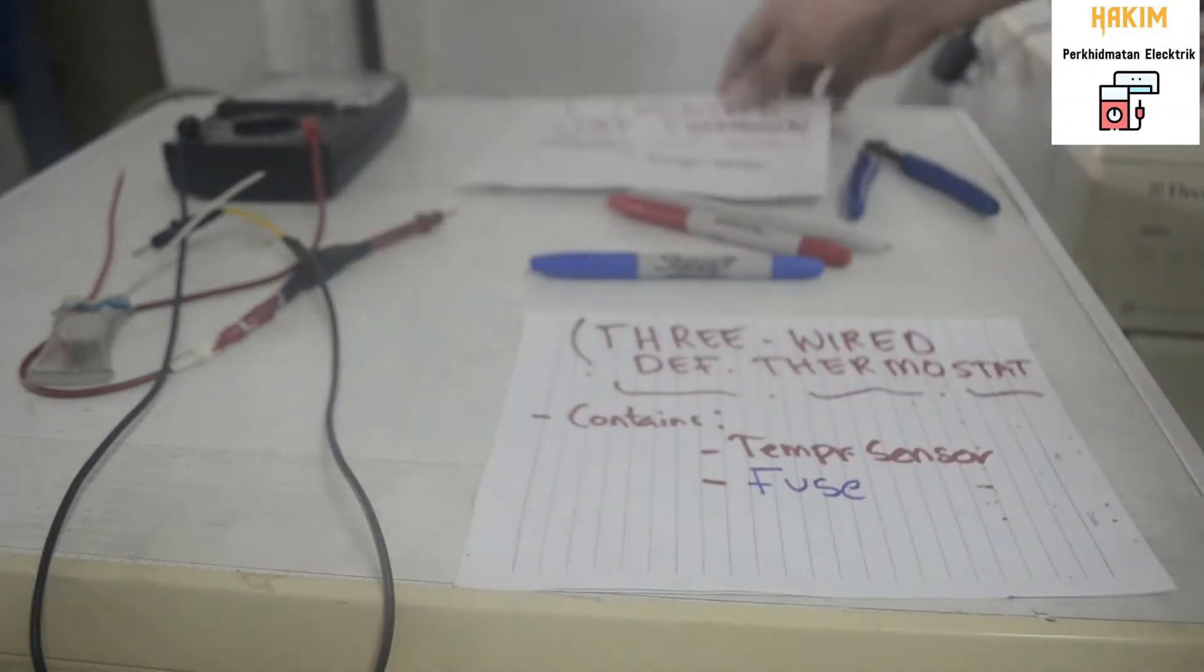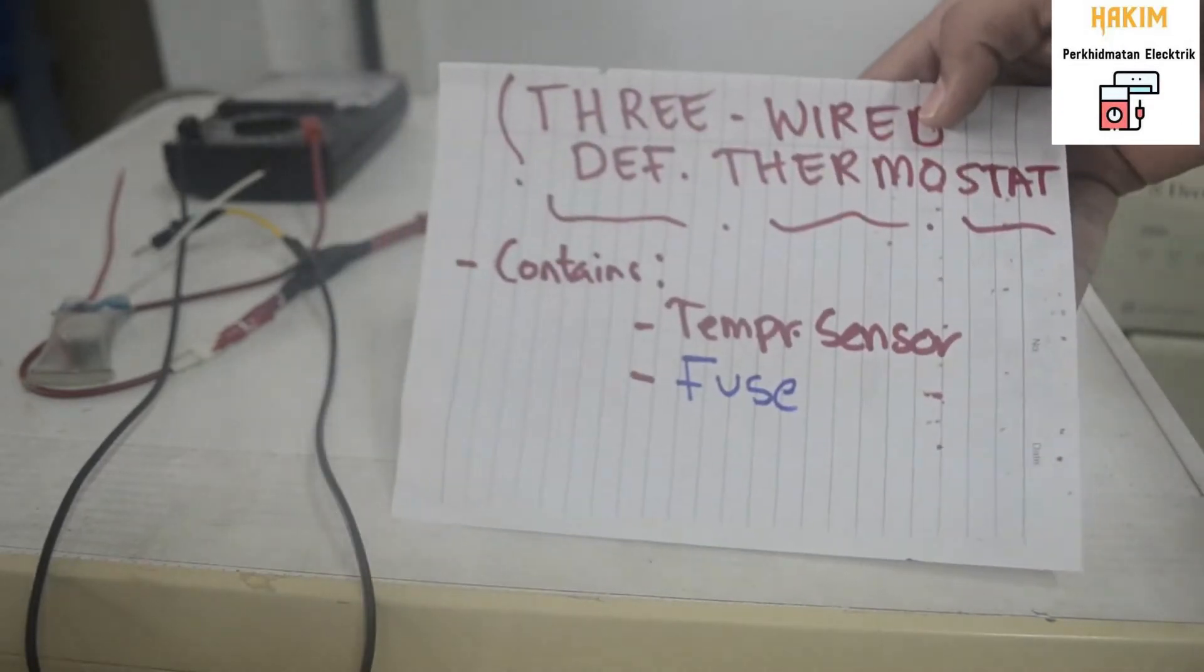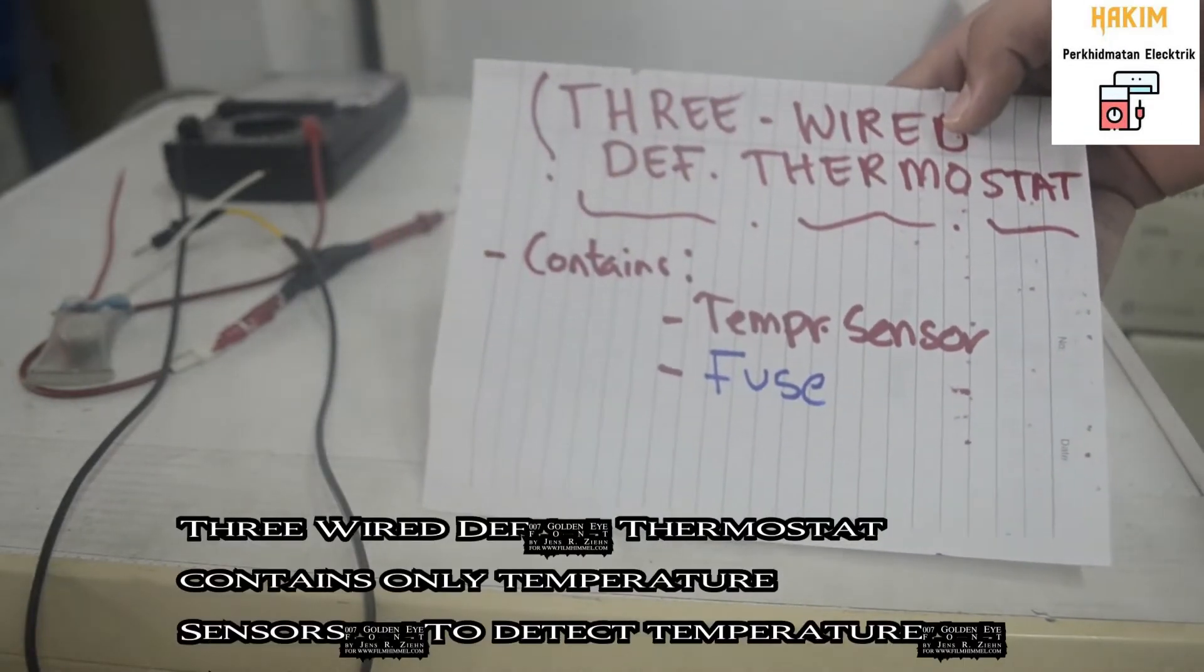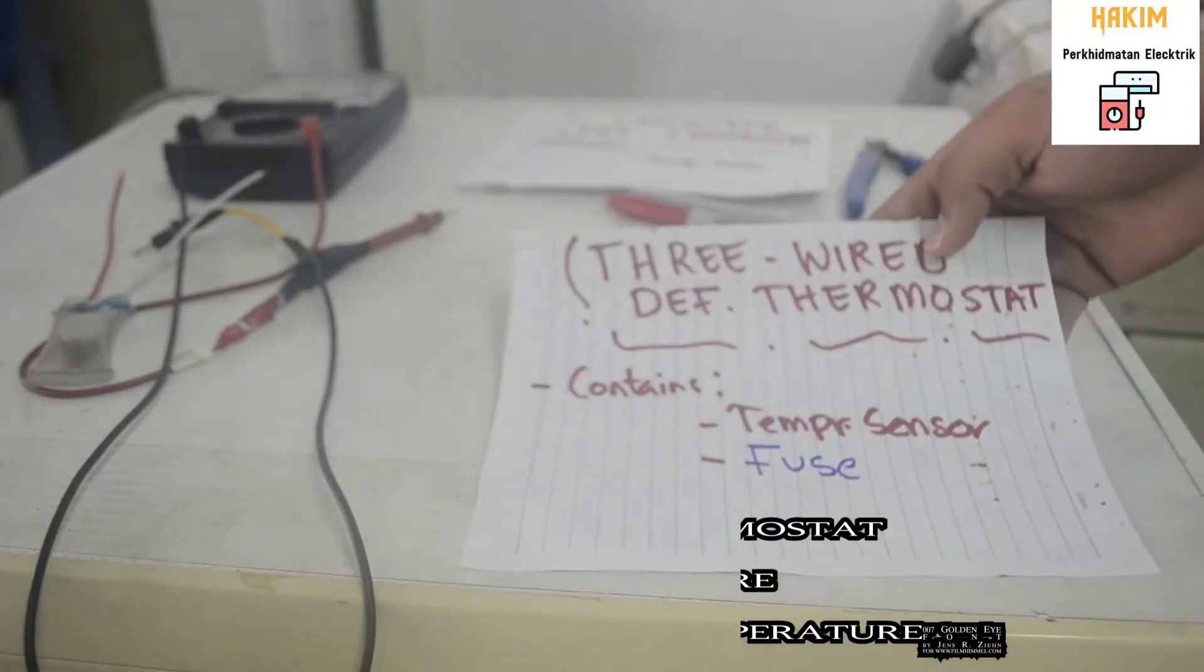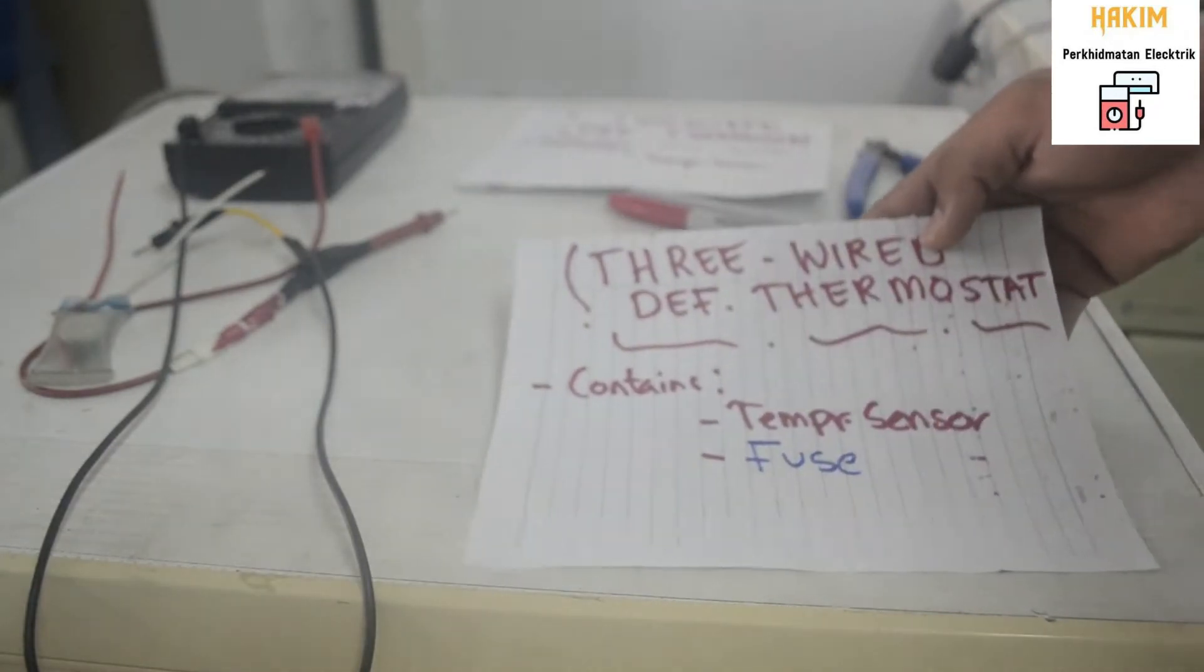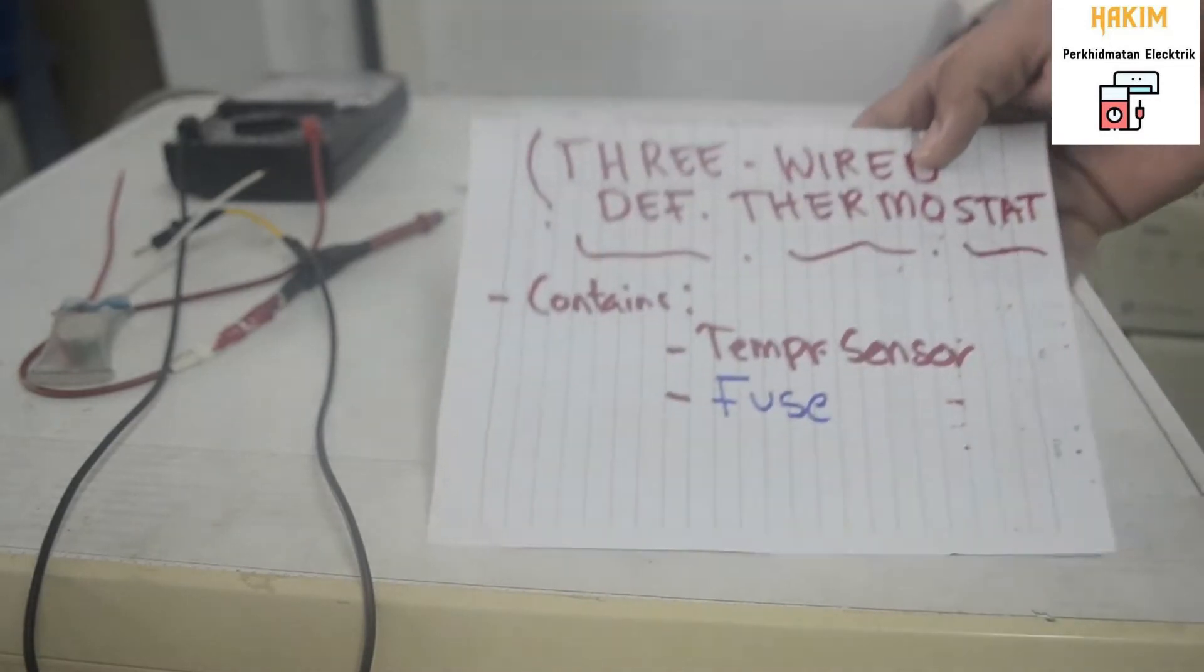Now, we have the three-wire defrost thermostat. It contains temperature sensor as the two-wire ones, but it also contains a fuse as you guys can see here.